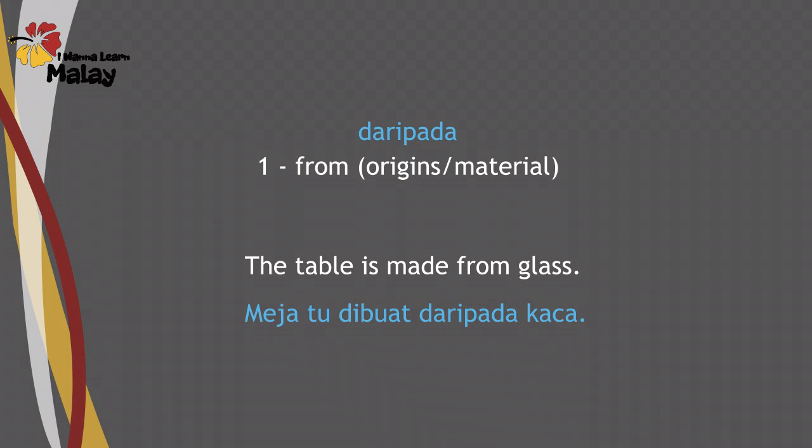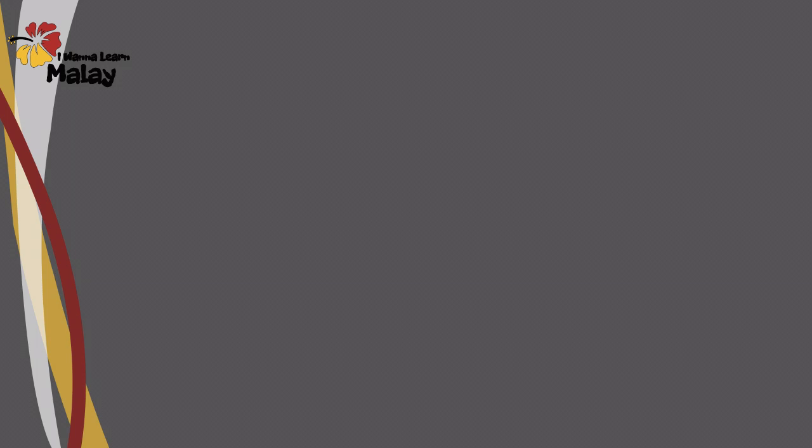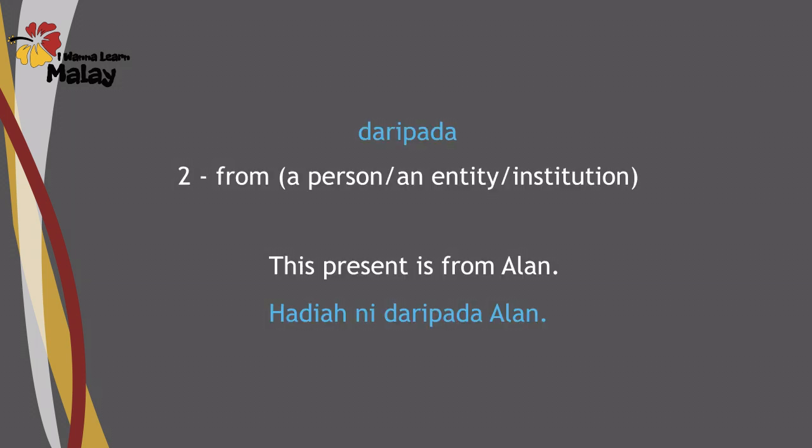For example: 'The table is made from glass' — Meja tu dibuat daripada kaca. Here, buat means to make, dibuat means made, and kaca is glass. Another example: 'This present is from Alan' — Hadiah ni daripada Alan. When you're receiving something from someone, you refer to daripada someone.